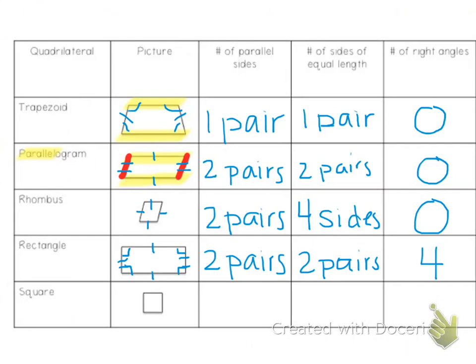The last one is a square. A square has four sides of equal length, two pairs of parallel sides, and four right angles. You're going to be classifying figures and figuring out all the ways we can name them. A square is also a rectangle, and it's also a rhombus, and it's also a parallelogram — it gets to have lots of different names because it has all of those attributes.